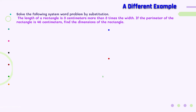Here's a different example. Solve the following system word problem by substitution. The length of a rectangle is three centimeters more than three times its width. If the perimeter of the rectangle is 46 centimeters, find the dimensions of the rectangle.